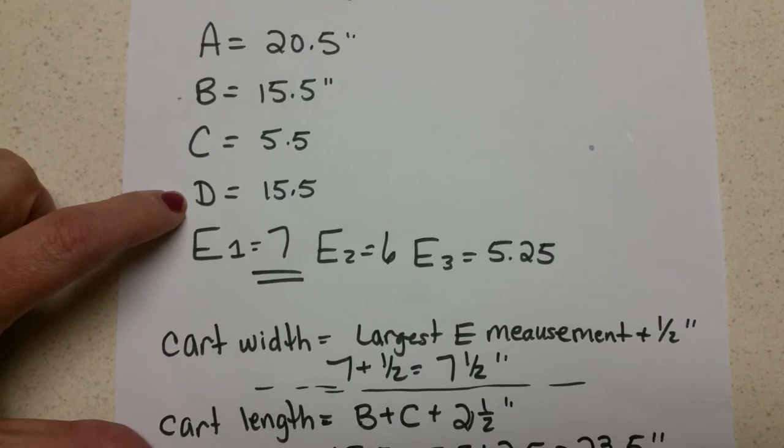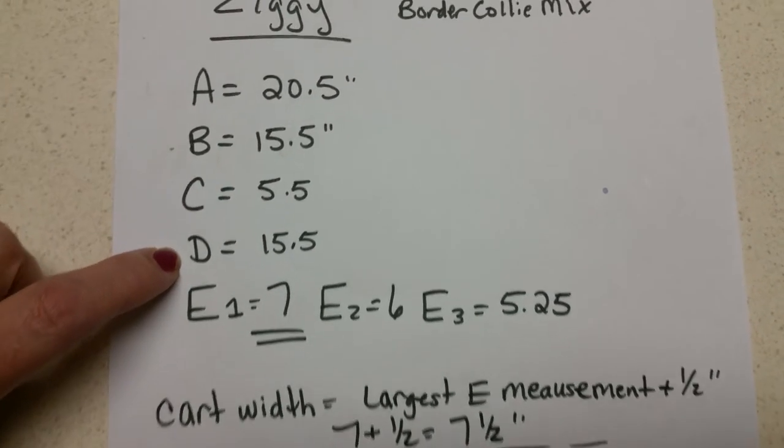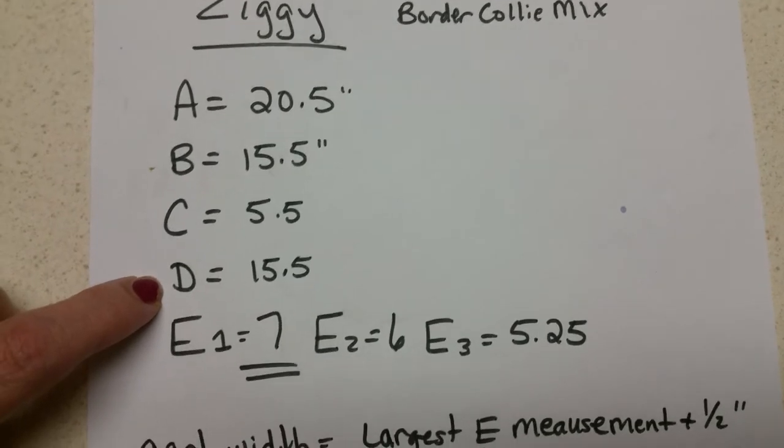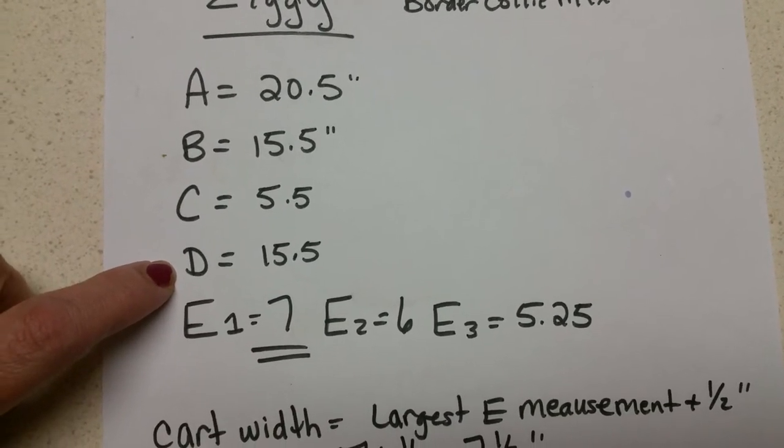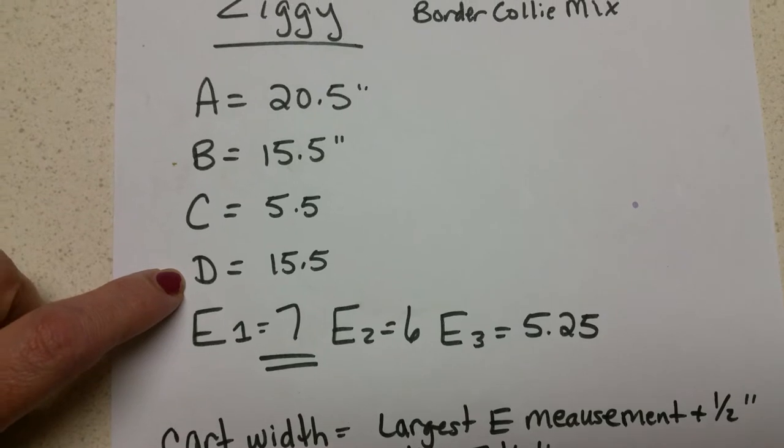D tells us how tall he is in the groin. So that's from the ground straight up in between the dog's legs until you feel skin.